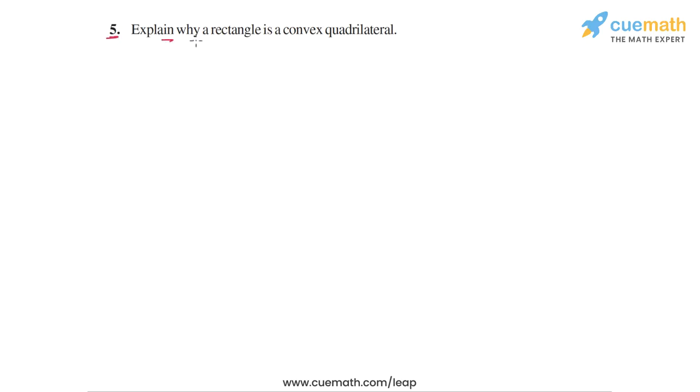Question 5 says explain why a rectangle is a convex quadrilateral. So what does this term mean, convex quadrilateral? In general, what do we mean by a convex polygon?